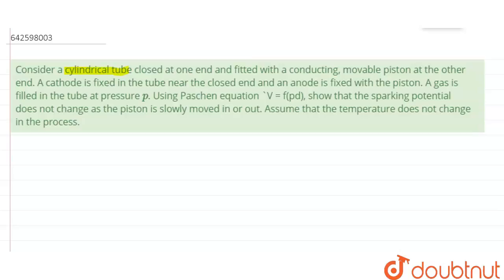Hello everyone. The question is: consider a cylindrical tube closed at one end and fitted with a conducting movable piston at the other end. A cathode is fixed in the tube near the closed end, and an anode is fixed with the piston. A gas is filled in the tube at pressure p. Using the Paschen equation, which is given as V equals a function of p and d.